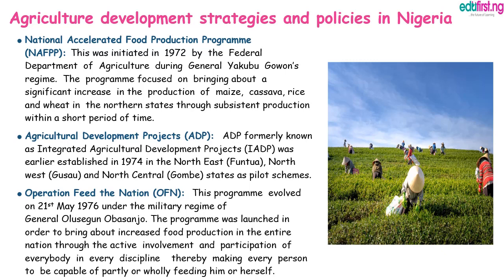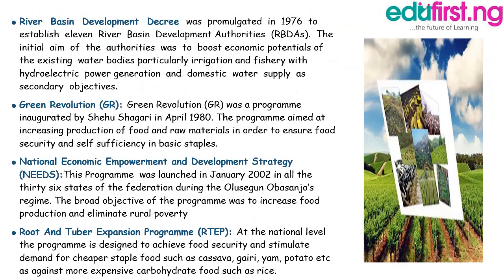The Agricultural Development Project was established in the northeast, northwest (Gusau), and north central as pilot schemes. Number three, Operation Feed the Nation — this program evolved on the 21st of May 1976 under the military regime of General Olusegun Obasanjo. It was launched in order to bring about increased food production in the entire nation through the active involvement and participation of everybody in every discipline, thereby making every person capable of partially or wholly feeding him or herself.